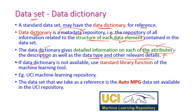If the data dictionary is not available, we can use standard library functions available for machine learning tools. One such standard source is the UCI Machine Learning Repository. We will try to download the auto MPG dataset from that repository, as all the examples in our textbook use this auto MPG dataset.